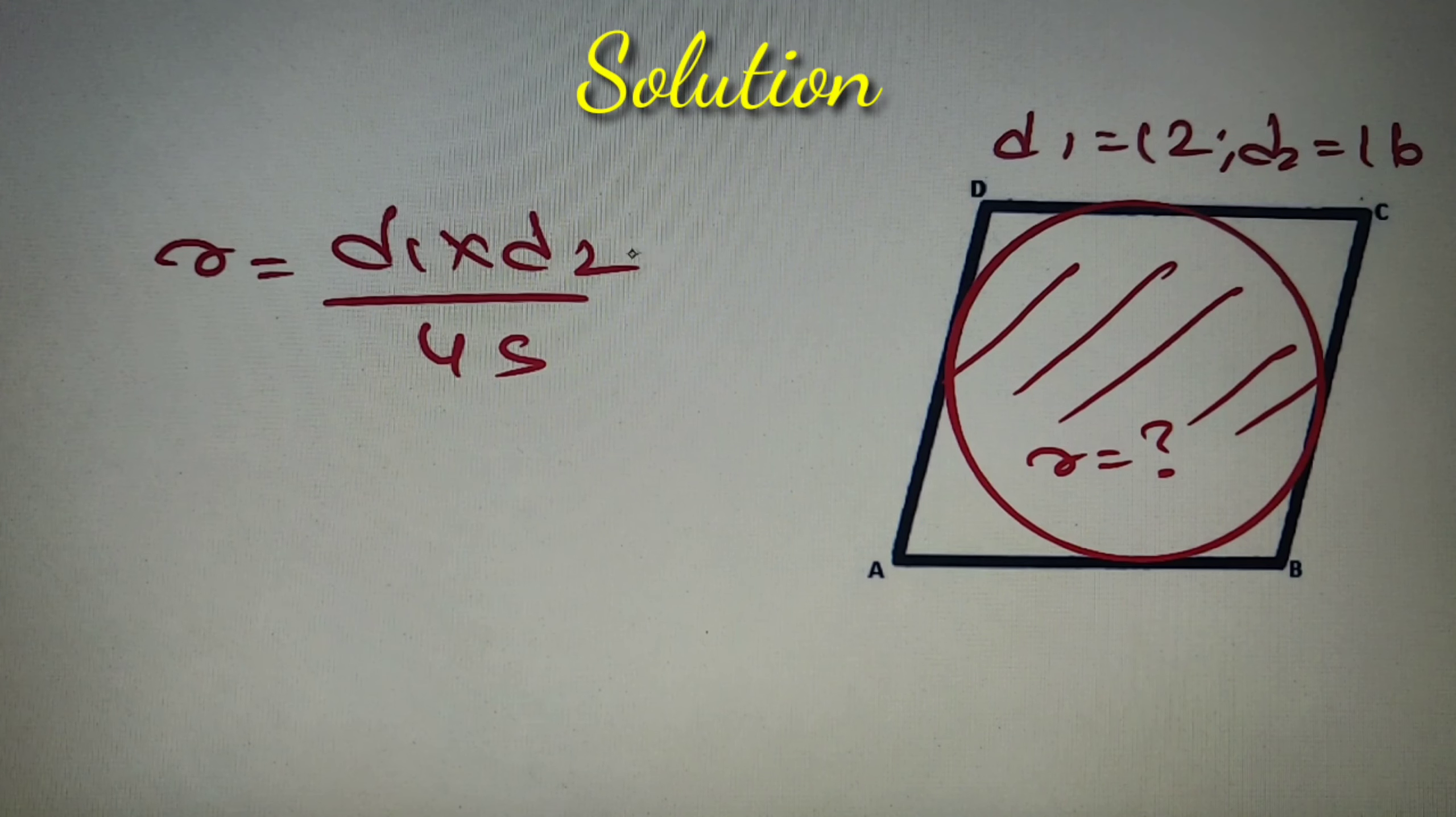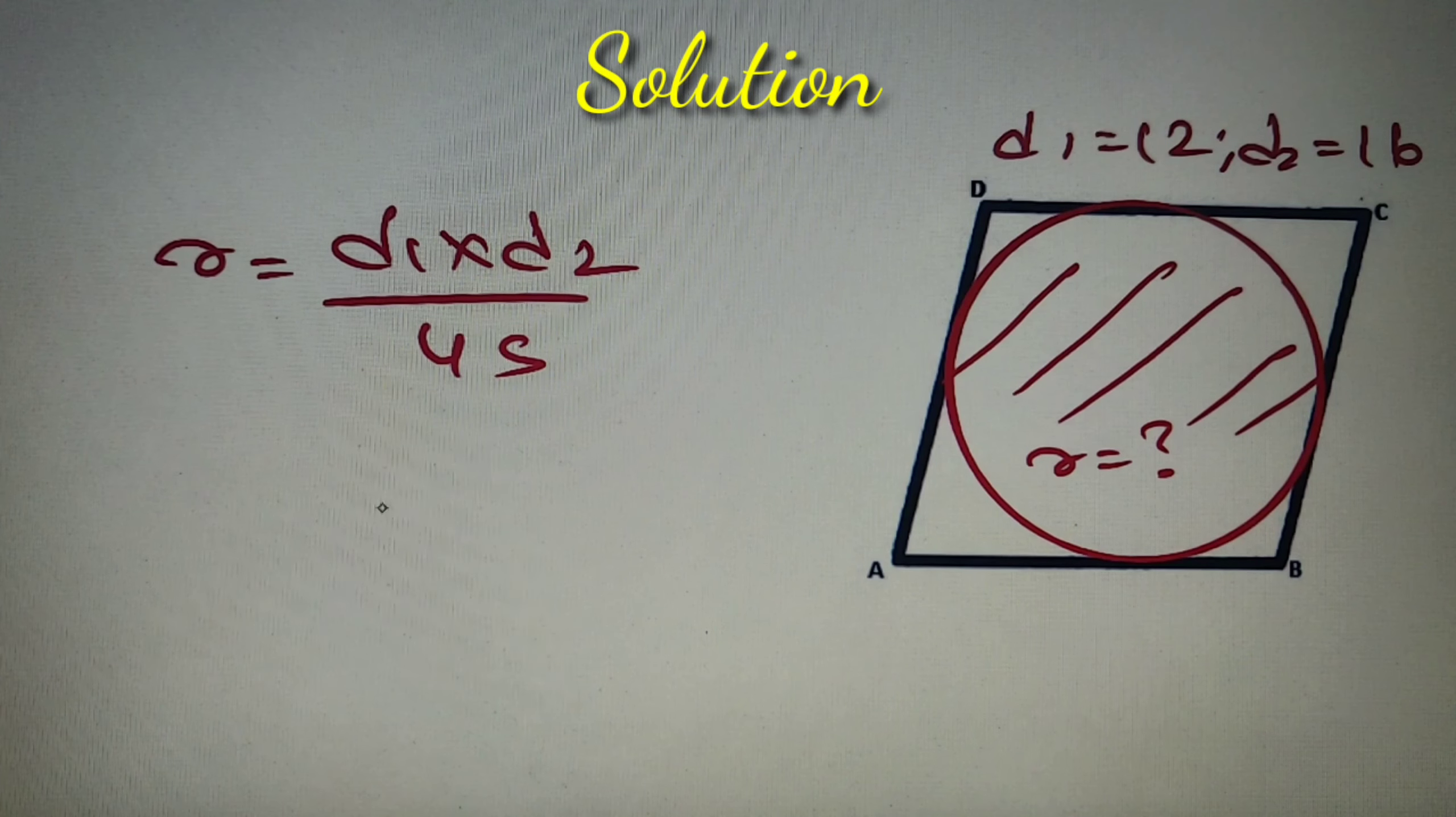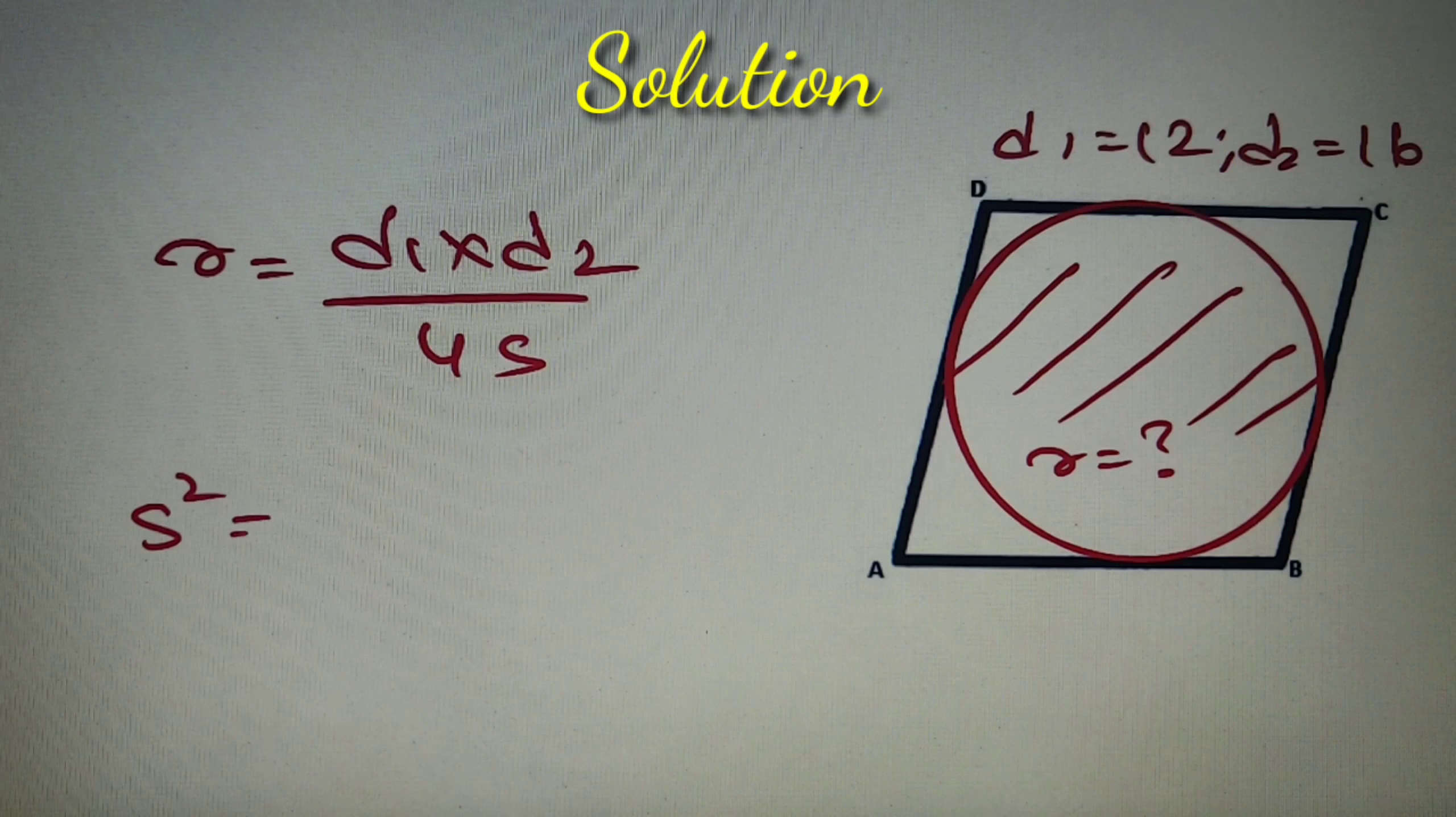Now the formula for the in-radius of any rhombus is R equal to D1 into D2 by 4S where D1 and D2 are the diagonals and S is the side of the rhombus.